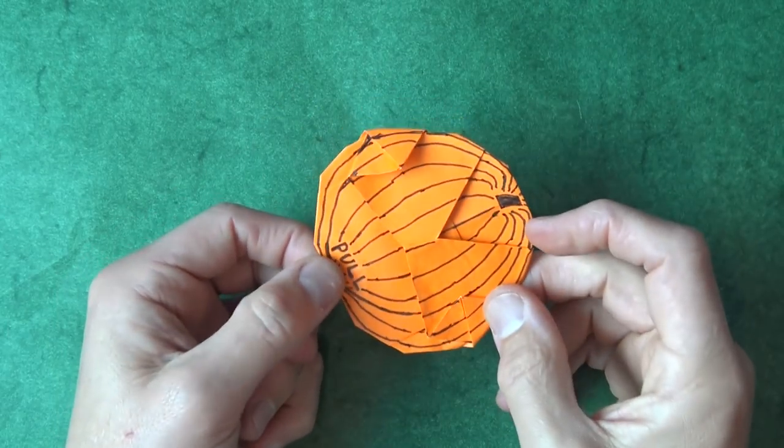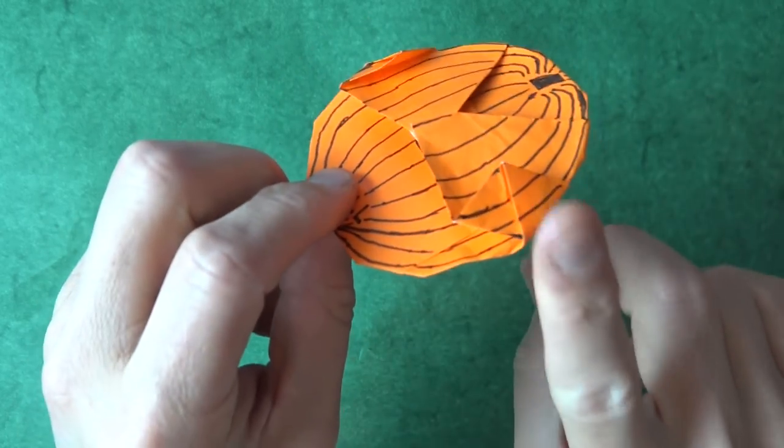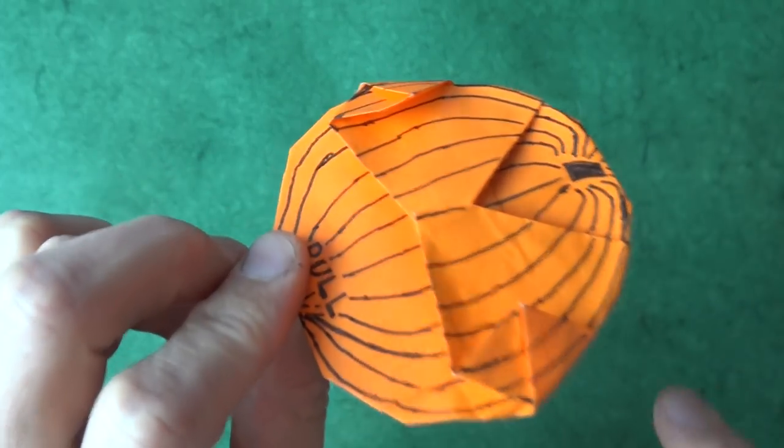Wait, one more thing I forgot to mention. This model can also be a flicker. You can flick it like that or you can flick it like that. I think it's best when you flick it on the triangle. But it's not going to fly very well. But here it goes.